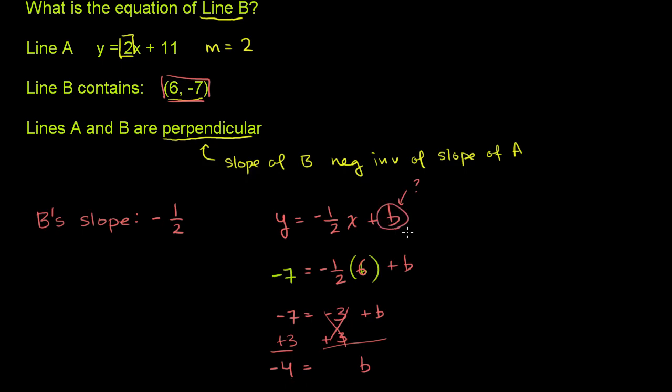So this right here is a negative 4. So the equation of line B is y equals, its slope is the negative inverse of this character, so negative 1/2x. And its y-intercept, we just figured out, is negative 4, minus 4. And we are done.